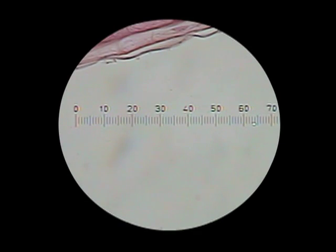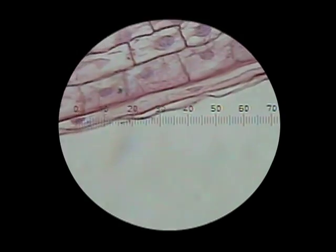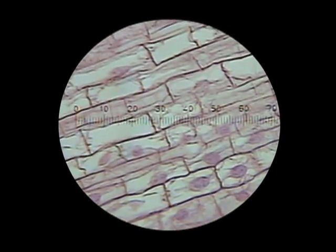Ocular lenses may also have a measuring device, often called the ocular micrometer. This will be discussed later in this video.